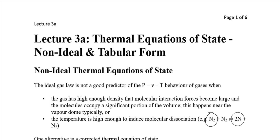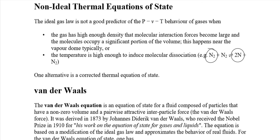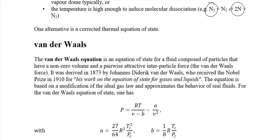The alternative approach towards predicting the non-ideal behavior, or what we call the real behavior of real gases, is to use corrected thermal equations of state. The first equation of state is the Van der Waals equation — it is the equation of state of a fluid composed of particles that have a non-zero volume and pairwise attraction forces between them.